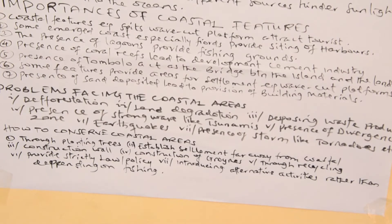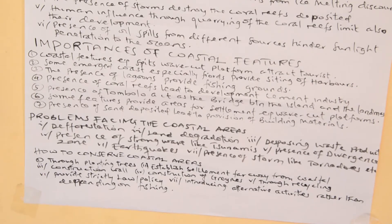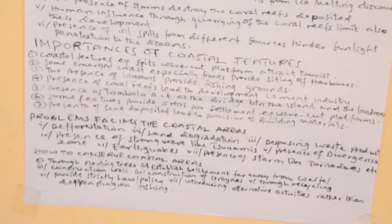Another conservation approach is to establish strict policies to prevent people from coastal destruction. Here, the government and people themselves have to make different laws or policies that restrict people from settling or destroying the landmass nearby the coast. Another measure is through establishment of various alternative activities rather than depending on fishing activities, in order to reduce coastal degradation. Fishermen should engage in other alternative activities which can generate revenue, rather than depending on fishing activities that might cause destruction of this landmass.